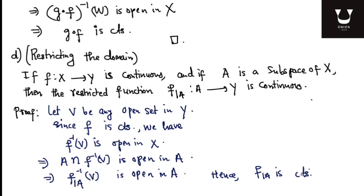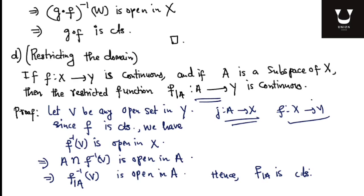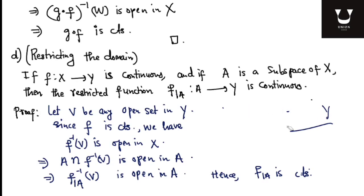One can also argue that this restricted function is the composition of the inclusion map j from A to X and the map f from X to Y. The inclusion map j is already continuous from our previous observation, and f is given to be continuous. Hence the composition of continuous functions is continuous, so this map is continuous.